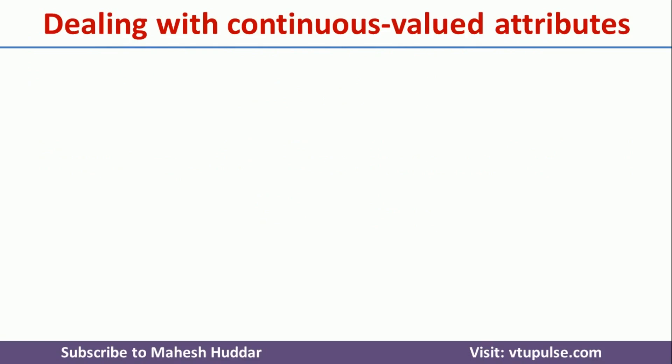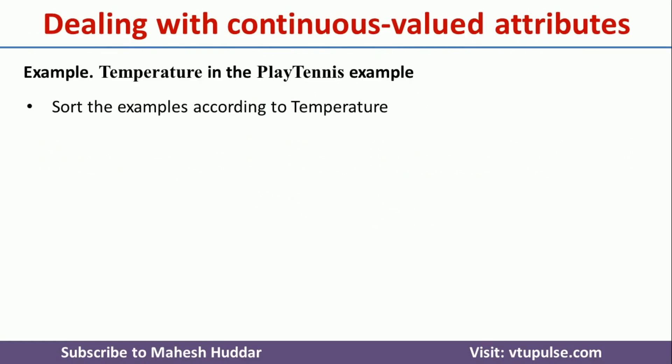When we want to build a decision tree, the very first thing we need to understand is we need to have attribute-value pairs, and the values of attributes should be discrete valued in nature.